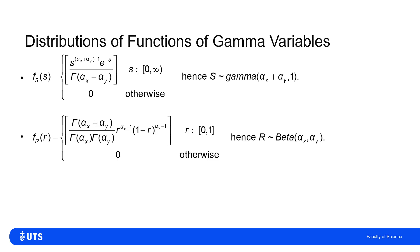And the other one is a little bit more complicated. This one has to only be between 0 and 1, but it's proportional to R to the alpha X minus 1, multiplied by 1 minus R to the alpha Y minus 1. And that's a beta distribution with parameters alpha X and alpha Y.